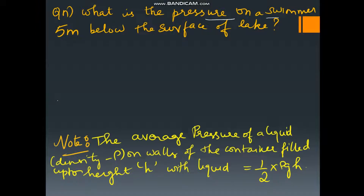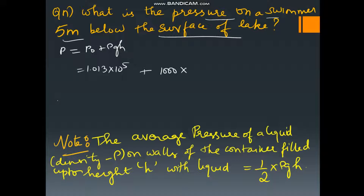Now let us work out a numerical. What is the pressure on a swimmer 5 meters below the surface of a lake? Pressure at depth P = P0 + ρgh = 1.013 × 10⁵ Pascal + 1000 × 10 × 5 = 1.013 × 10⁵ + 50000, giving 1.0513 × 10⁵ Pascal. This is the pressure on a swimmer 5 meters below the surface.